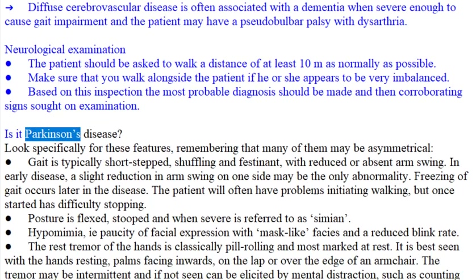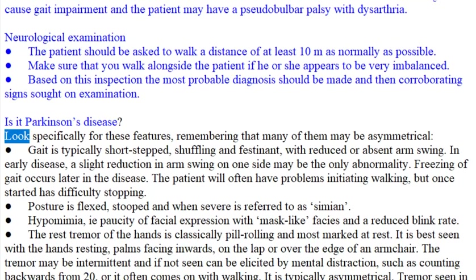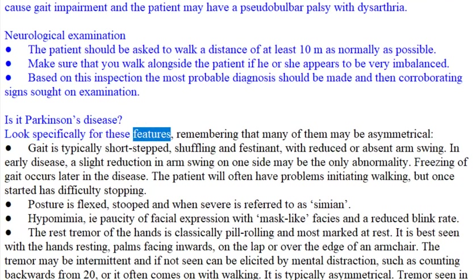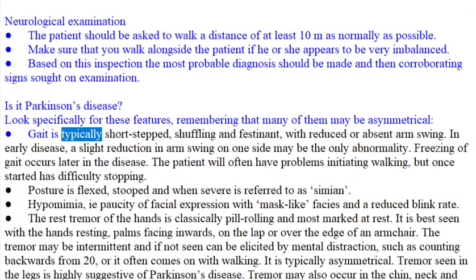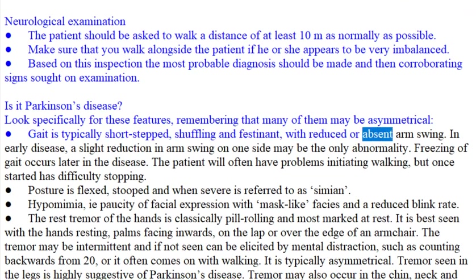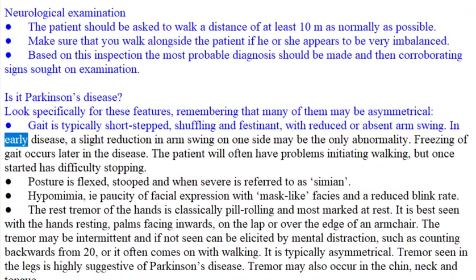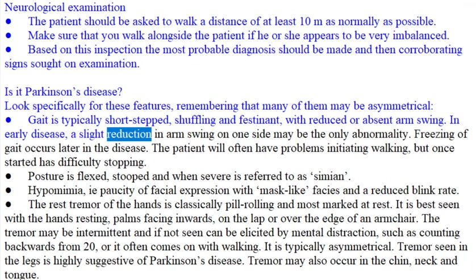Is it Parkinson's disease? Look specifically for these features, remembering that many of them may be asymmetrical. Gait is typically short-stepped, shuffling and festinant, with reduced or absent arm swing. In early disease, a slight reduction in arm swing on one side may be the only abnormality.